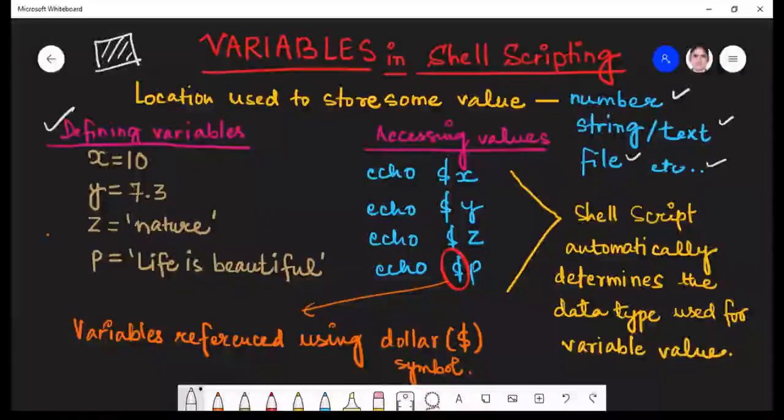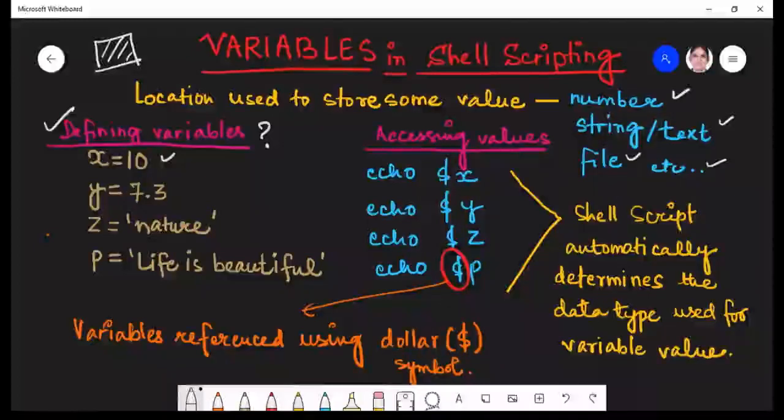So the next thing is how to define a variable. To define a variable, we simply need to write the name of the variable. In the previous video I explained the different rules of defining a variable. You can go through that video to understand it better. So I have taken this variable X in which I have stored a value 10.